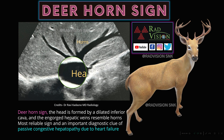The last case shows a dilated IVC with multiple hepatic veins draining into it, all distended and dilated. This appearance mimics a deer head with horns — the 'Deer Horn Sign.' Thanks to Dr. Ravi Kadasane for contributing this image. The deer horn sign represents a dilated inferior vena cava forming the head, with engorged hepatic veins forming the horns. It is the most reliable diagnostic sign for passive congestive hepatopathy due to cardiac failure.